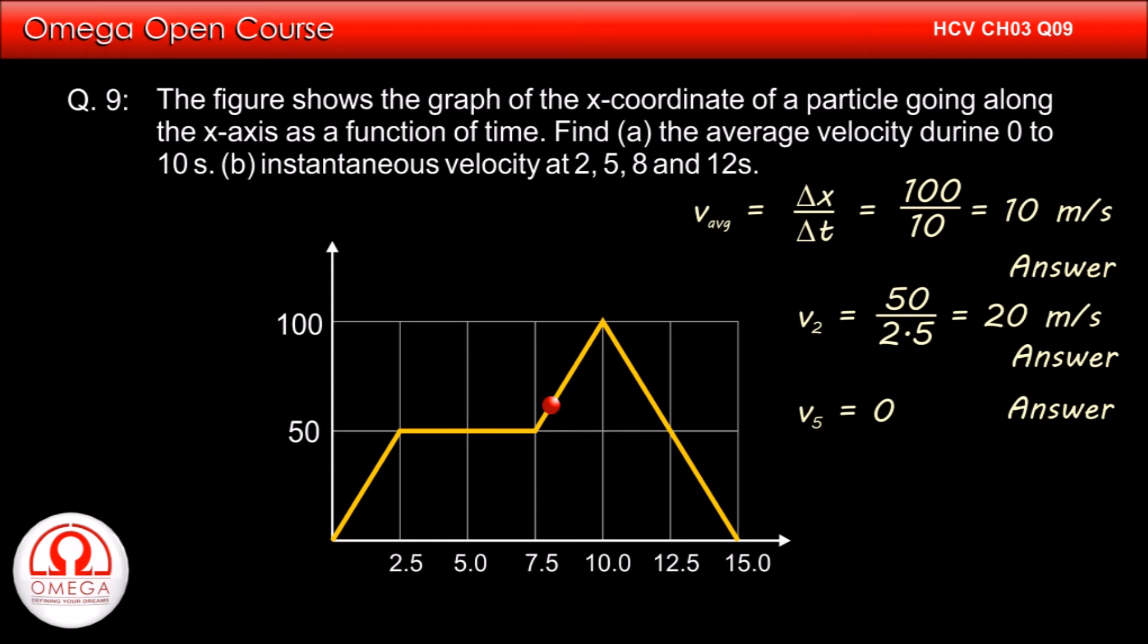Similarly, the slope at t equals 8 seconds is the same as the slope in the interval t equals 7.5 seconds to t equals 10 seconds. That is 50 divided by 2.5, or 20. Thus, velocity at t equals 8 seconds is equal to 20 meters per second.